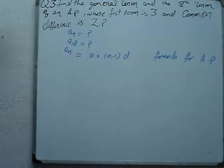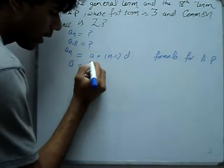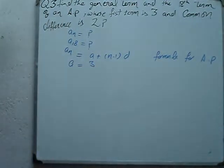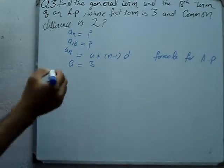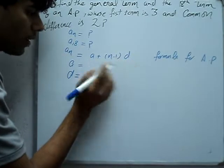Given: First term is 3, so A equals 3. And common difference D equals 2.